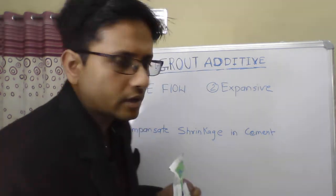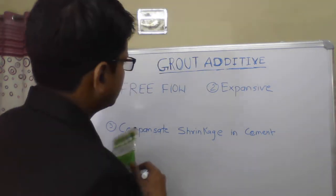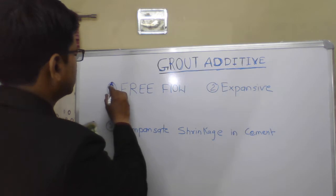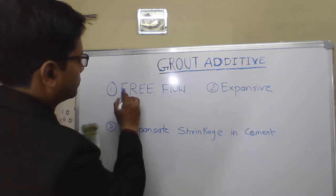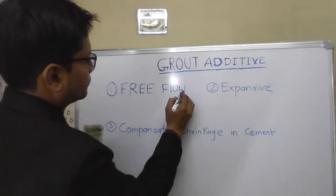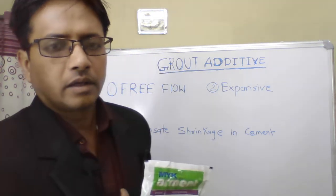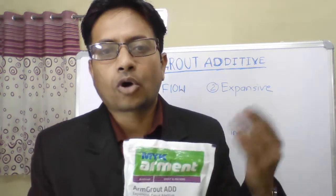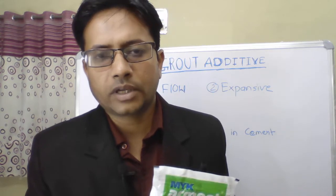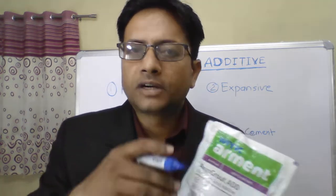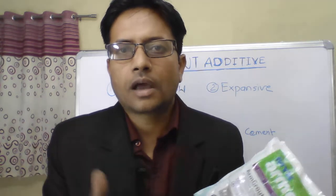Now some very important features. The first feature is free flow. Free flow — what does it mean? It actually increases the fluidity of the slurry without increasing the water-cement ratio. So it increases the workability of the slurry so that the slurry will travel to the voids and travel to the holes inside the concrete easily.